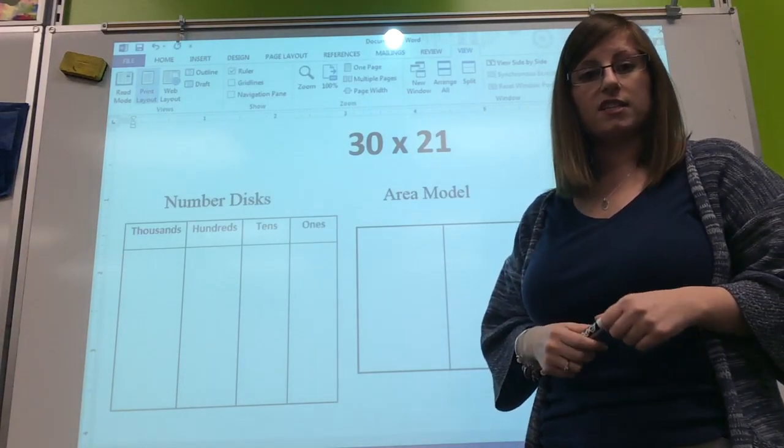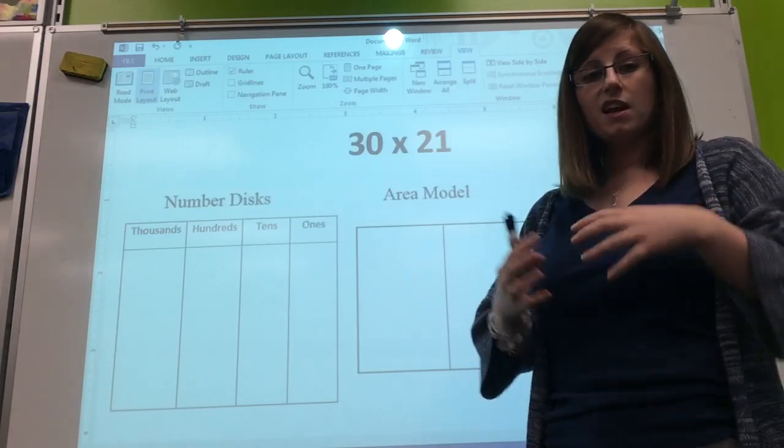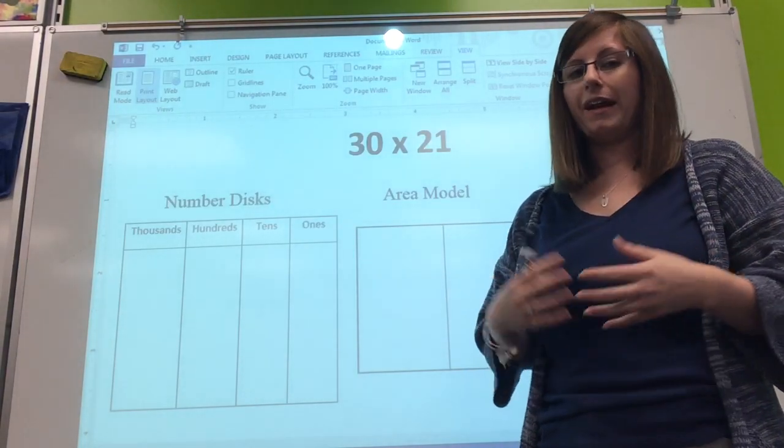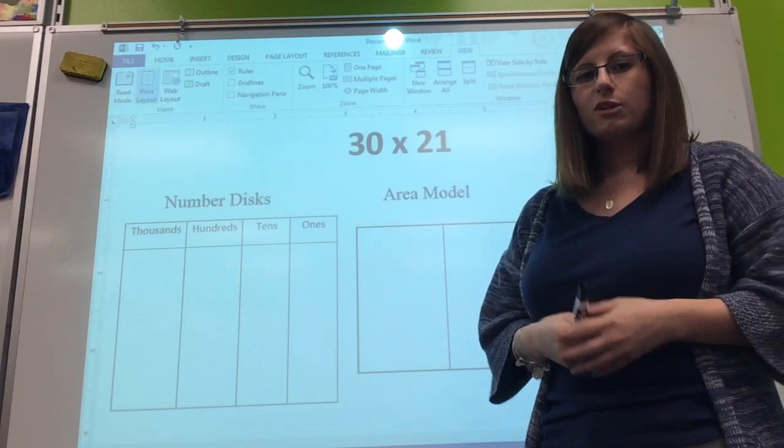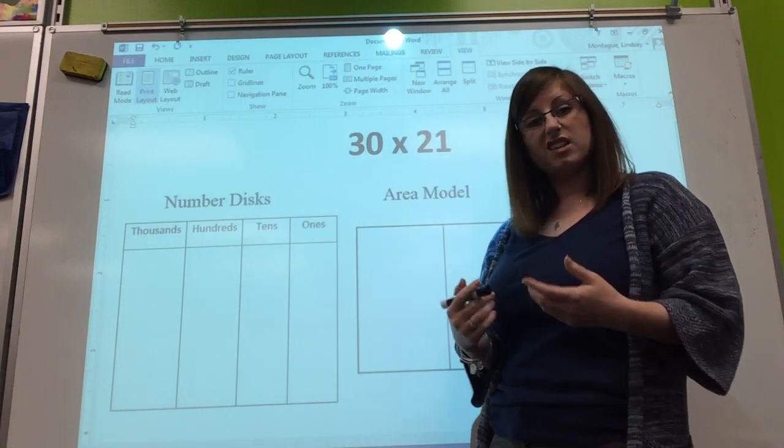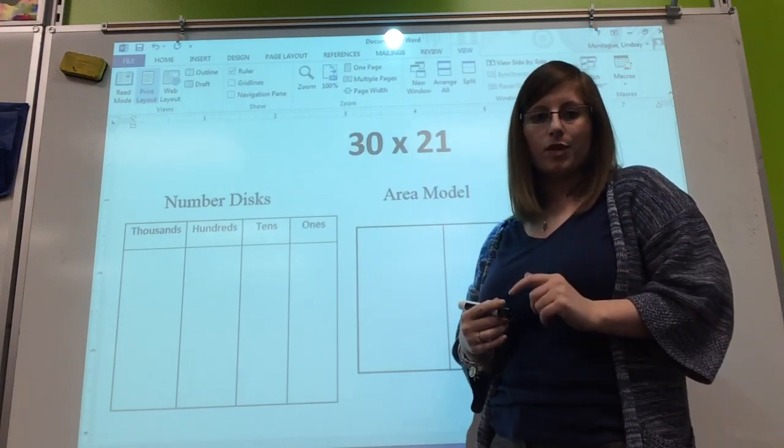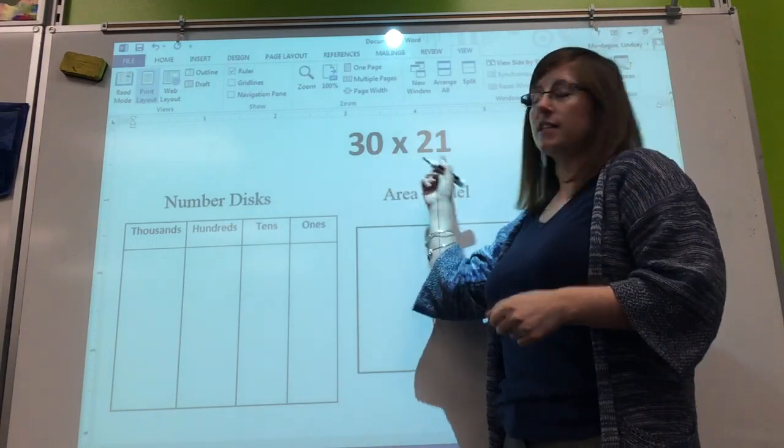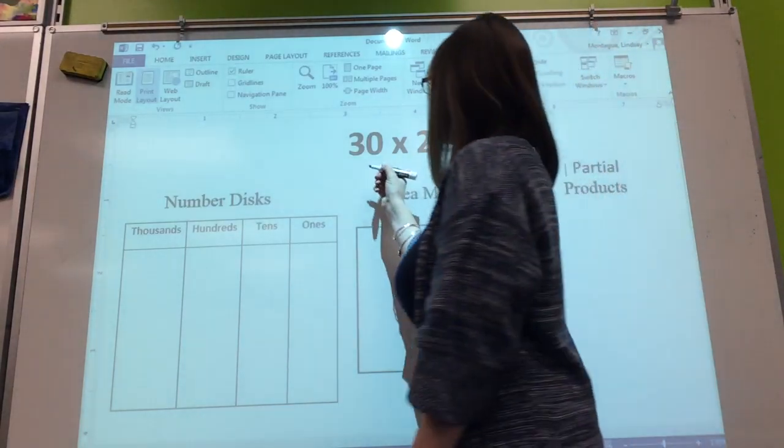We have learned that this property tells us we can break apart the numbers and rearrange the order and still get the same answer, so we can play around with our numbers a little bit which makes it easier. We break apart the 30 because that's our multiple of 10. Instead of 30 times 21, we're going to do 3 times 10 times 21.